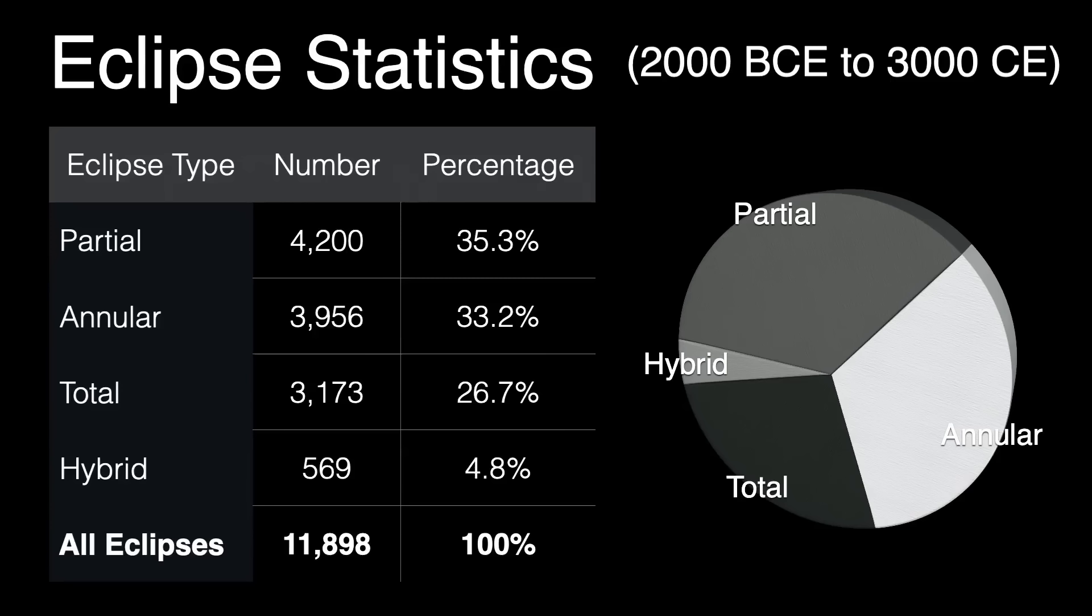A hybrid eclipse is one that starts out or ends as annular, with a central total eclipse portion. Those make up around 5% of all eclipses.